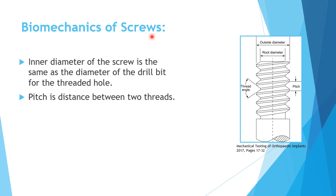In the screw, there are some definitions I'd like to review: the inner diameter, sometimes called the root diameter, and the outer diameter. The outer diameter is the diameter between the ends of the threads, and this is the diameter we use to describe the screw. So if you say a 3.5 millimeter screw, that means the outer diameter between the ends of the threads is 3.5 millimeter.